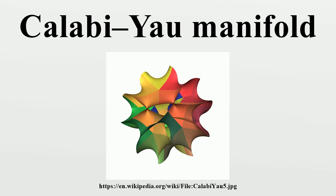A Calabi-Yau manifold, also known as a Calabi-Yau space, is a special type of manifold described in certain branches of mathematics such as algebraic geometry. The Calabi-Yau manifold's properties, such as Ricci flatness, also yield applications in theoretical physics, particularly in superstring theory. The extra dimensions of space-time are sometimes conjectured to take the form of a six-dimensional Calabi-Yau manifold, which led to the idea of mirror symmetry.